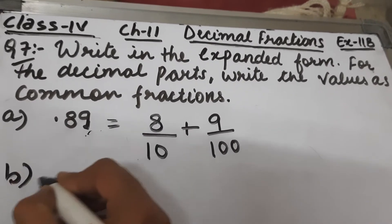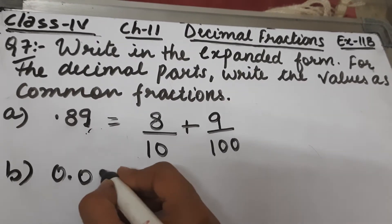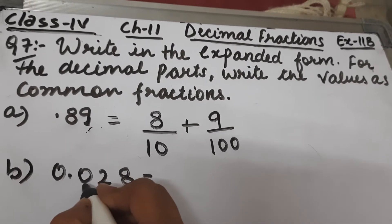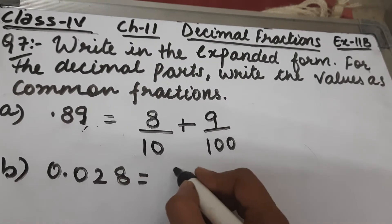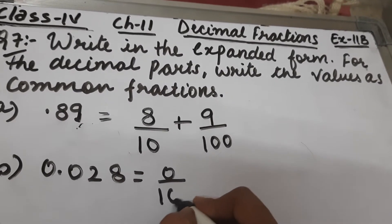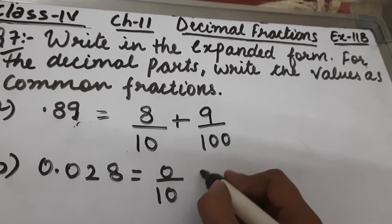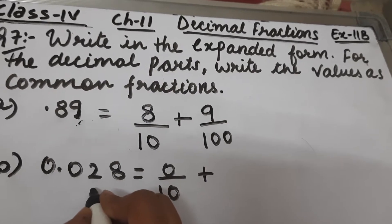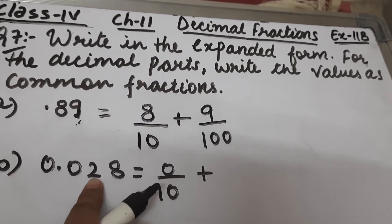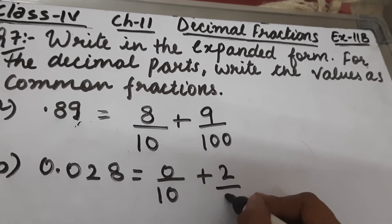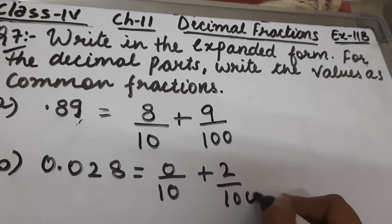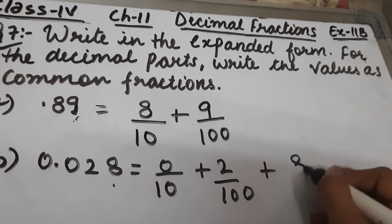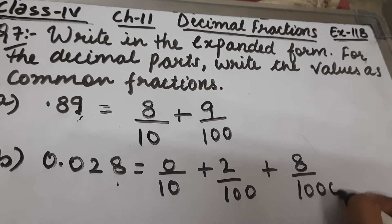Part b is 0.028. The digit just after the decimal is 0, meaning the tenths place is 0, so we write 0 by 10. After that we have 2 at the hundredths place, so we write 2 by 100. And this is the thousandths place, so this will be 8 upon 1000.